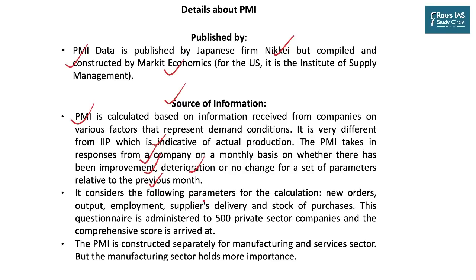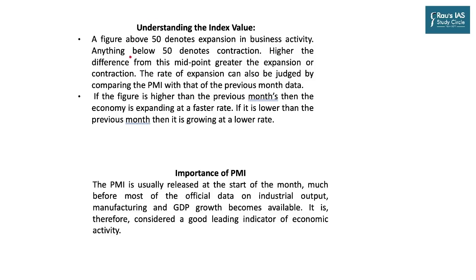The parameters used by PMI include: new orders, output or production, employment, suppliers' delivery, and stock of purchases. This questionnaire is administered to 500 private sector companies and a comprehensive score is arrived at. PMI is constructed separately for manufacturing and services sectors, with manufacturing holding more importance. A figure of 50 is the critical midpoint — above 50 denotes expansion in business activity and below 50 denotes contraction. The rate of expansion can be judged by comparing PMI with the previous month's data.